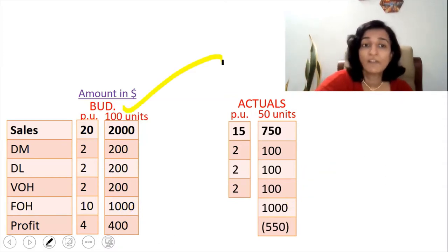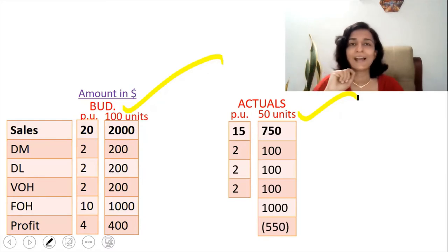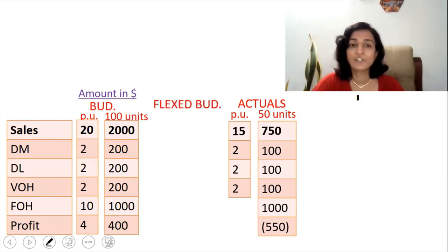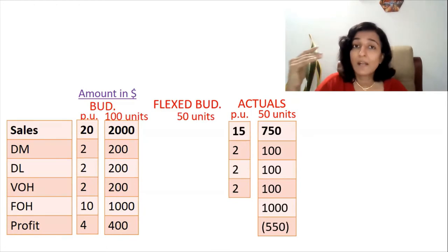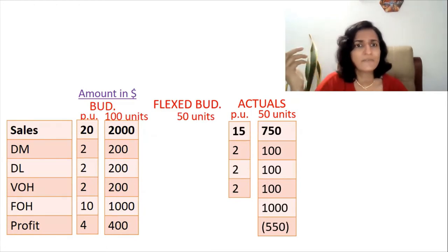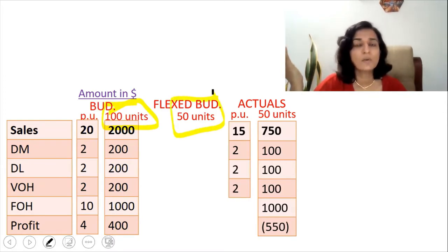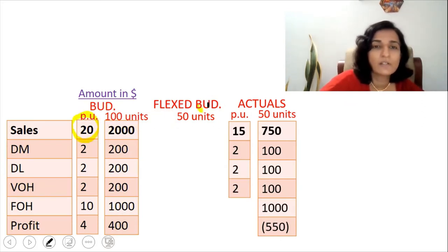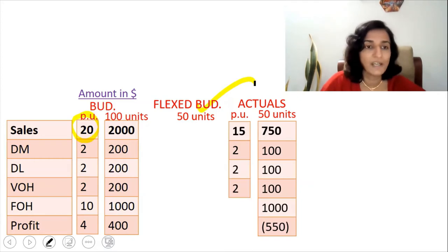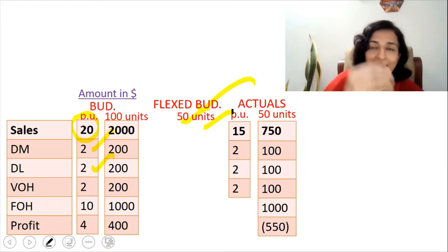Now we have the budgets for 100 units and the actuals for 50 units, so we have to flex the budget to the actual activity level. Let's prepare the flexed budget for the actual activity level of 50 units. Instead of budgeting for 100 units, we are budgeting for 50 units — that's the only difference. So we do $20 × 50 for sales, $2 × 50 for direct material, $2 × 50 for direct labor, and so on.